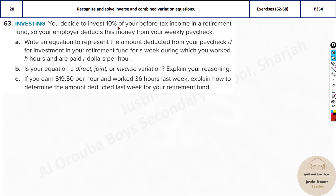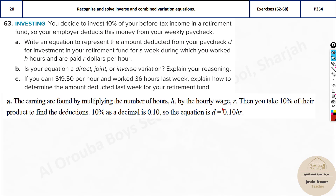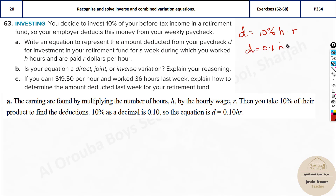This is a joint equation because there are two factors: hours and dollars. The deduction D equals 10% of H times R, so D equals 0.1HR. That is the equation for the weekly retirement fund deduction.